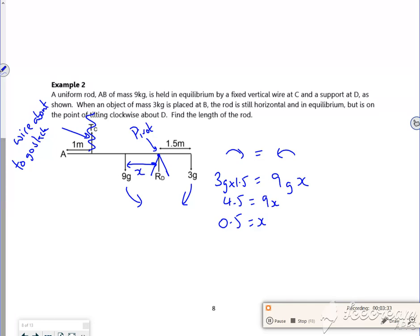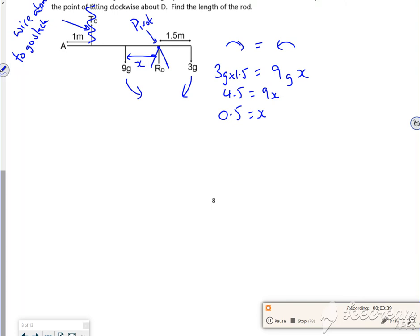So that must mean then from the 9g to the 3g... hang on, not working properly. So from the 9g through to the 3g, that's going to be 0.5 plus 1.5, so that's going to be 2 meters.